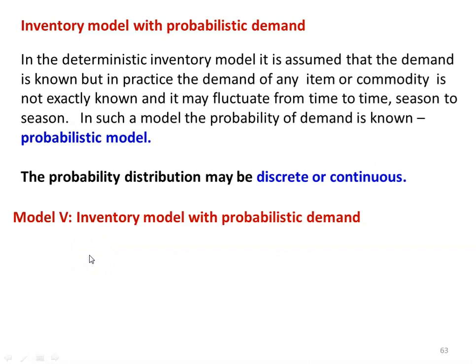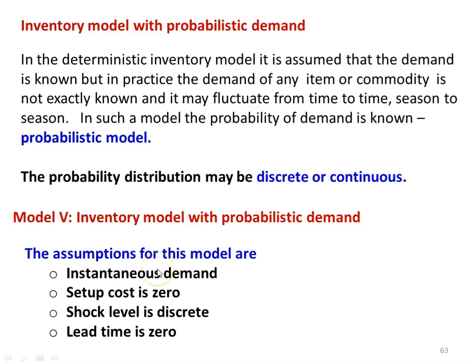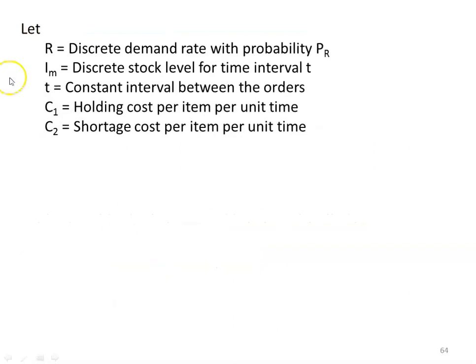We are going to discuss four different models with probabilistic demand. The first two models are very important from the examination point of view. The assumptions for model number 5 are: instantaneous demand, setup cost is zero, stock level is discrete, and lead time is zero. The parameters are: R is the discrete demand rate with probability P(R); I_M is the discrete stock level for time interval T; T is the constant interval between orders; C1 is the holding cost per unit per unit time; C2 is the shortage cost per item per unit time.